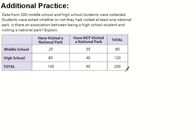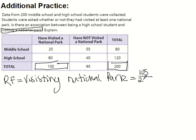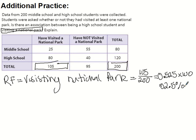We're specifically looking at high school students visiting a national park. Remember, we first look at how many visited a national park overall — we want the relative frequency of that. So we do 105 over 200. Using a calculator: 105 divided by 200 gives us a decimal, and times 100 gives us 52.5%. So visiting a national park overall is about 52%.